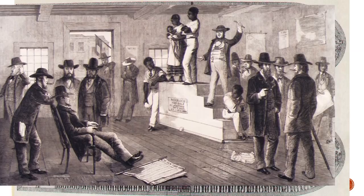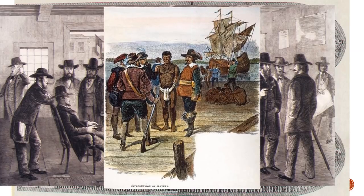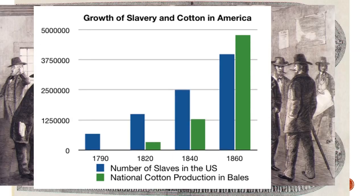Slave owners then forced their purchased slaves to work in their fields, growing cash crops like rice, cotton, and tobacco. The first slaves in the American colonies arrived in Jamestown, Virginia in 1619. Over the next 200 years, around 500,000 more slaves were brought to the American colonies.